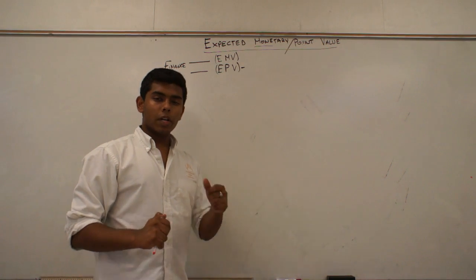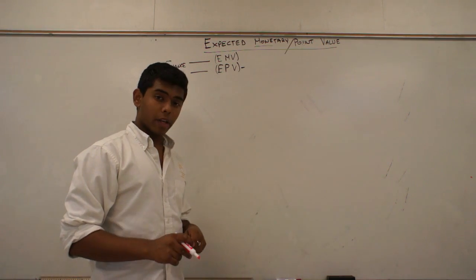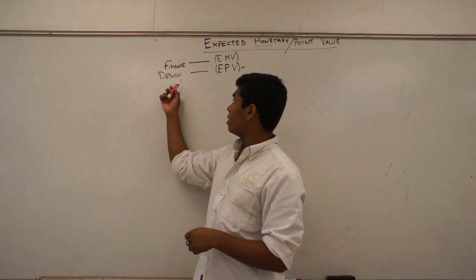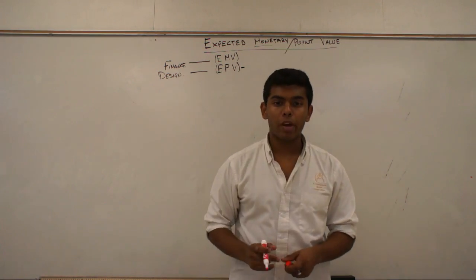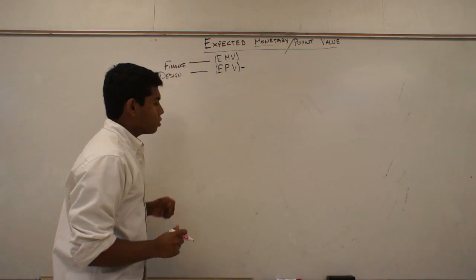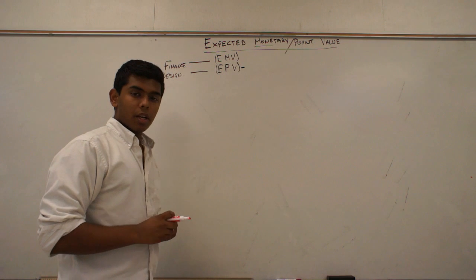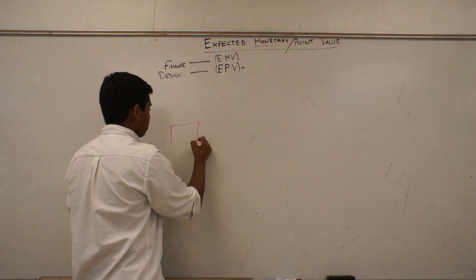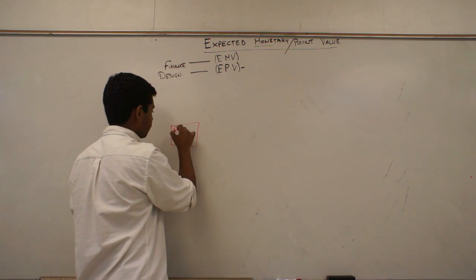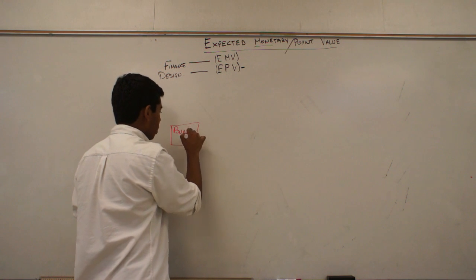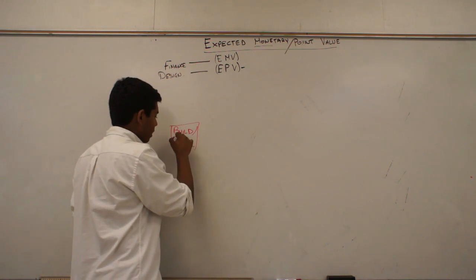Hi. We've gone over expected point value. Now, we want to go over expected monetary value, which will be used by finance. So let's say we're in a scenario where we want to either build a plant or we want to upgrade a plant.